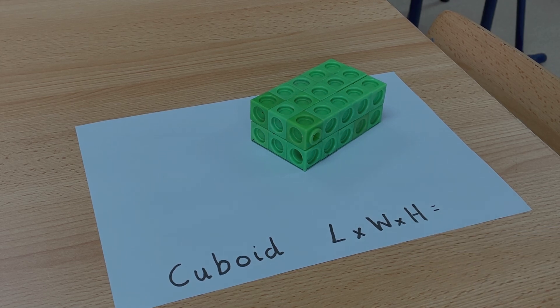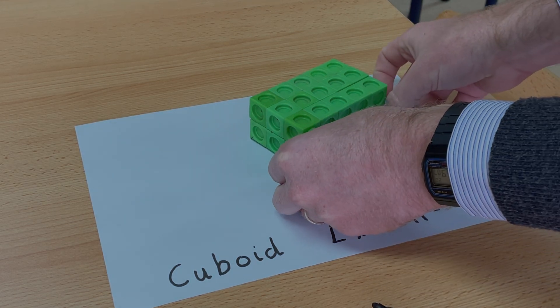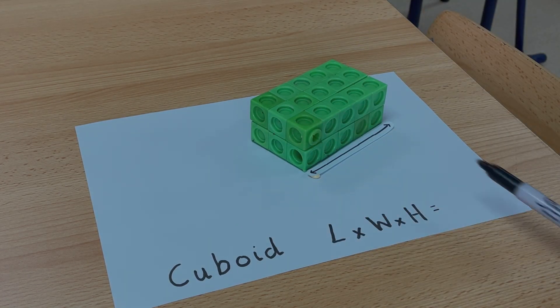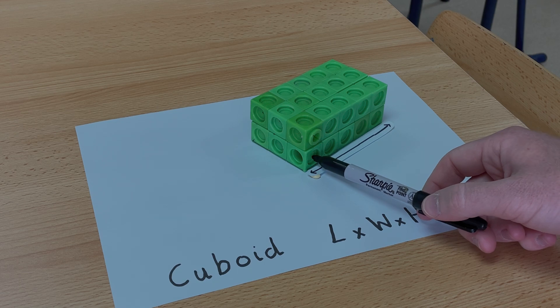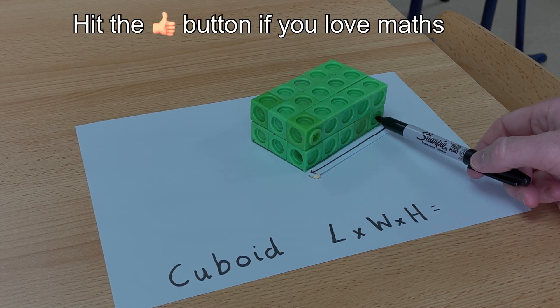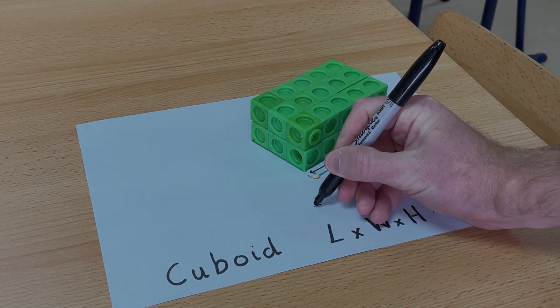So what is the length? Well the length is all of this part here, all of this side of the 3D shape. So that is 1, 2, 3, 4, 5. So the length of this is 5, so I'm going to put 5 above here.